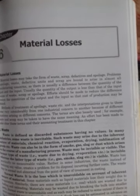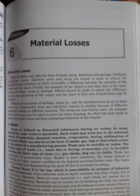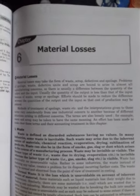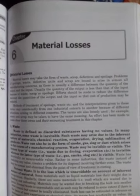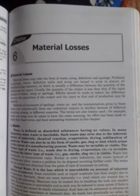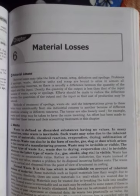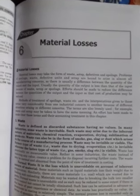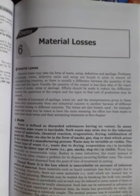Material losses can be in the form of waste, scrap, defective and spoilage. When we produce a final product, waste materials like plastic that are useless can be called scrap or scrap material. Next is waste.